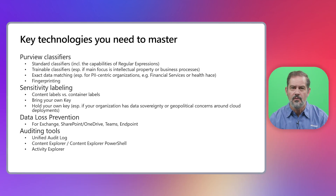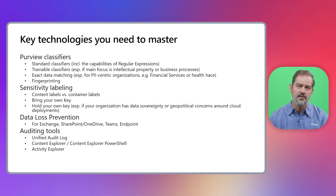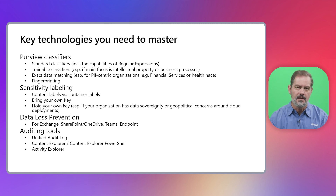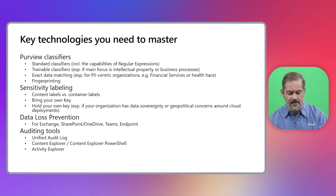You will also want to be familiar with sensitivity labeling and the differentiation between container labels and content labels, and how content labels can be used to apply restrictions on documents and emails — technologies like encryption with Microsoft Information Protection, visual markings, dynamic watermarks, and other technologies available as part of sensitivity labels, and also how these are applied manually or automatically to different kinds of assets.